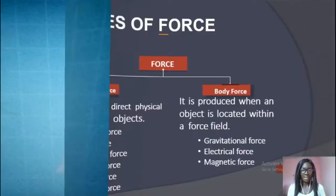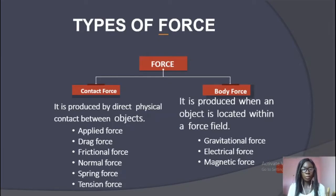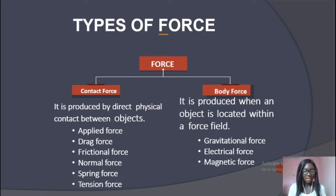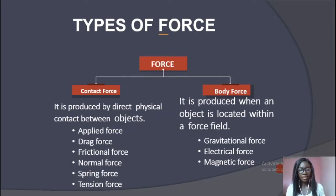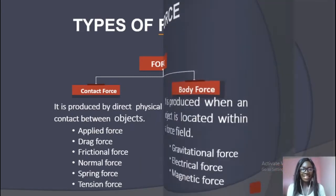This slide is what we did in the last class, so I'm going to give a little recap. Contact force is produced by direct physical contact with an object. Examples include applied force, drag force, frictional force, normal force, spring force, and tension force. Non-contact force — also called field force — is produced when an object is located within a force field. You are not touching the object; the force acts on its own. Examples are gravitational force, electrical force, and magnetic force.